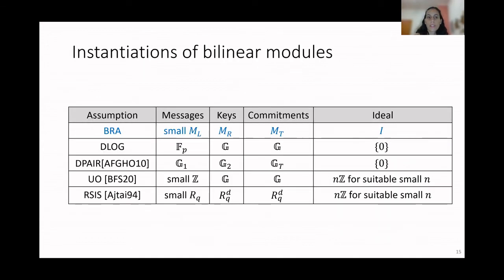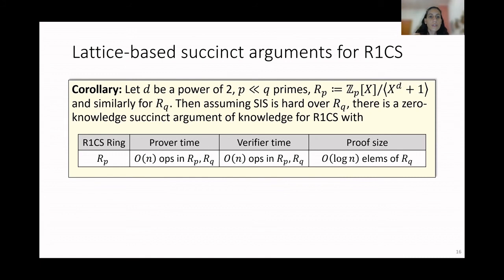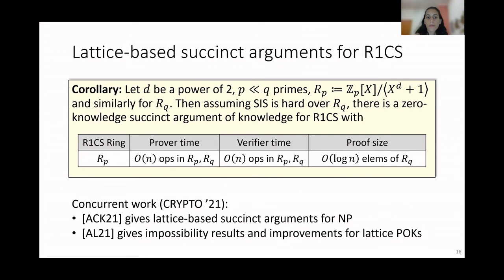In the paper, we give different instantiations of bilinear modules, including settings such as the discrete logarithm, the pairing, groups of unknown order, and the ring SIS. A particular instantiation is the lattice-based instantiation, which gives us succinct arguments of knowledge for R1CS based on a lattice assumption — in particular the ring SIS assumption. I should also mention that there has been some concurrent work in this space also appearing at this conference. Specifically, there is a work giving lattice-based succinct arguments for NP using split-and-fold techniques, and another work showing some impossibility results on the efficiency of this instantiation and also providing different instantiations of lattice rings for the ring SIS assumption.